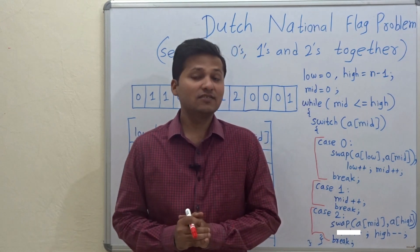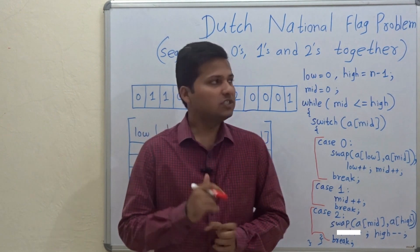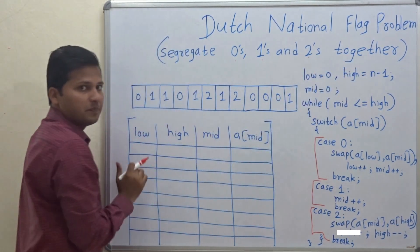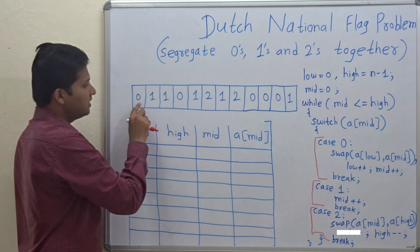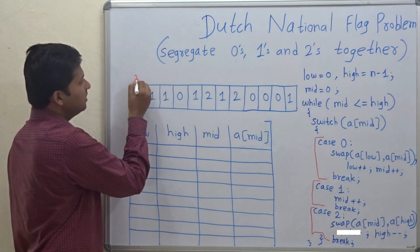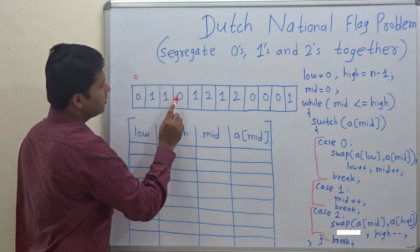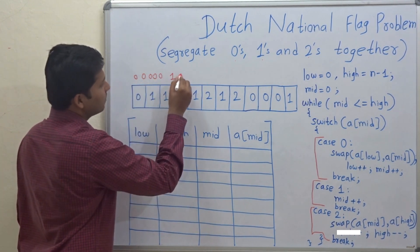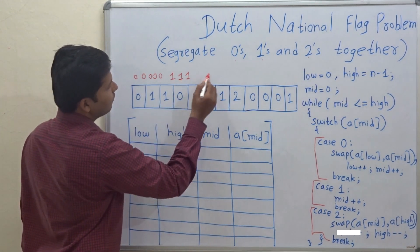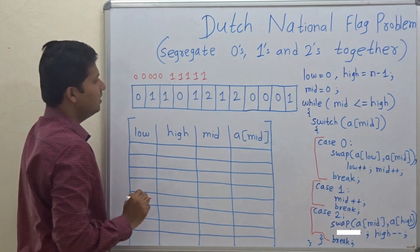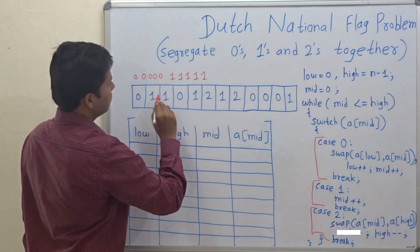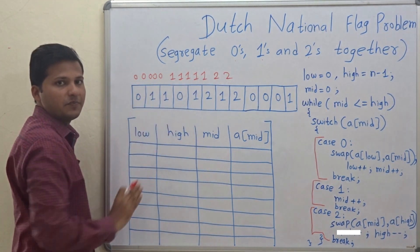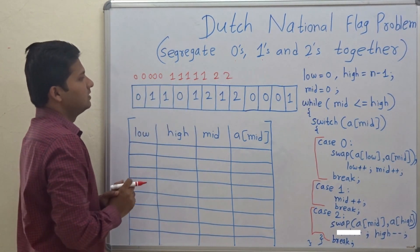Hello friends, today we are going to see the Dutch National Flag problem, which means we have to segregate zeros, ones, and twos together in an array. If this is the array, we have to take all the zeros together — there are five zeros — all the ones together, and all the twos together. So there are two twos, and this should be the answer.